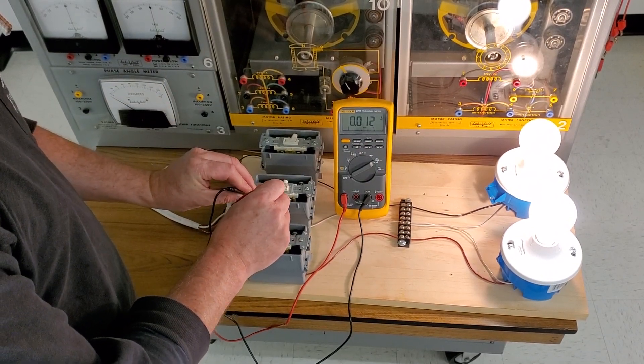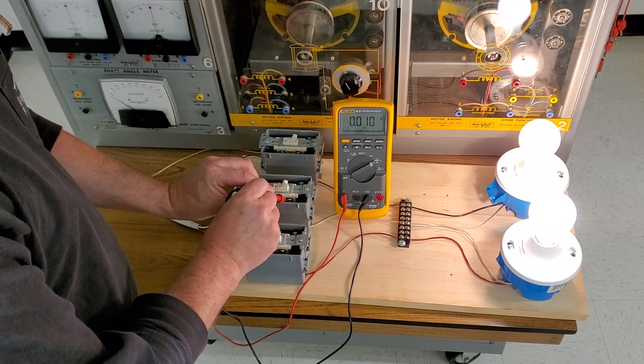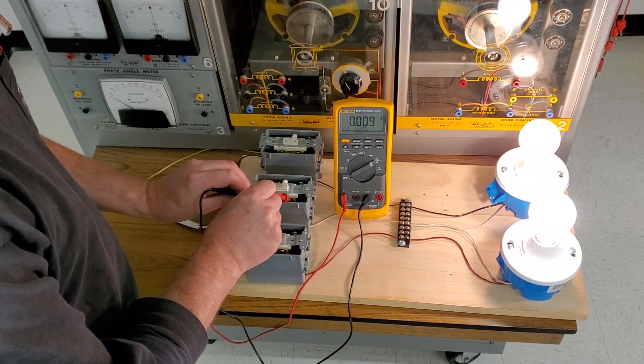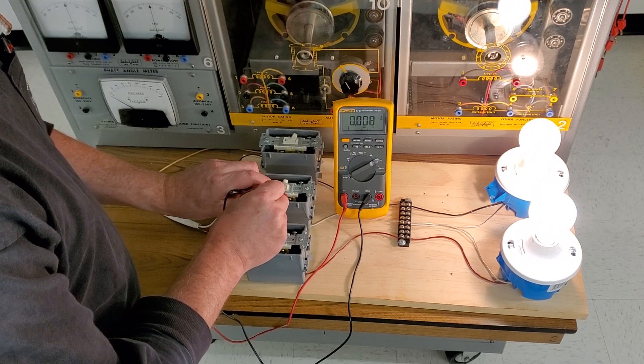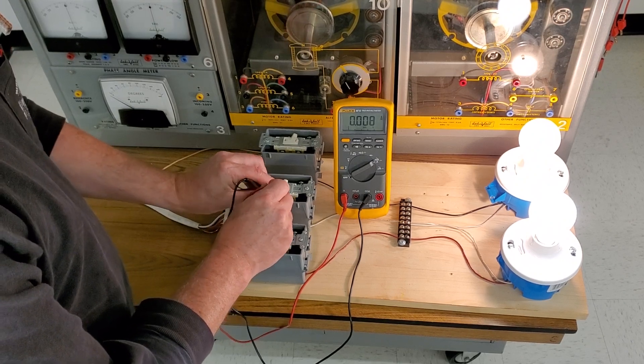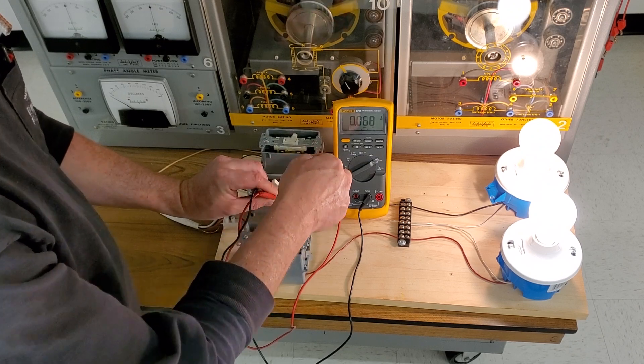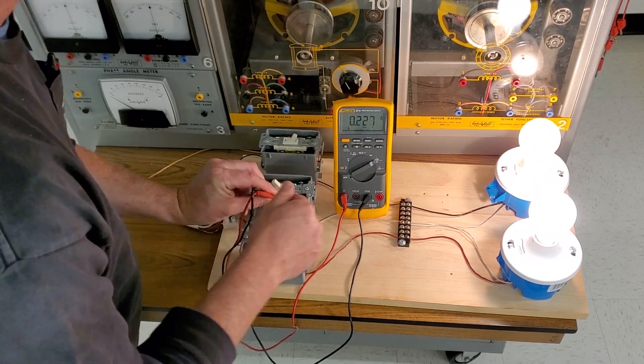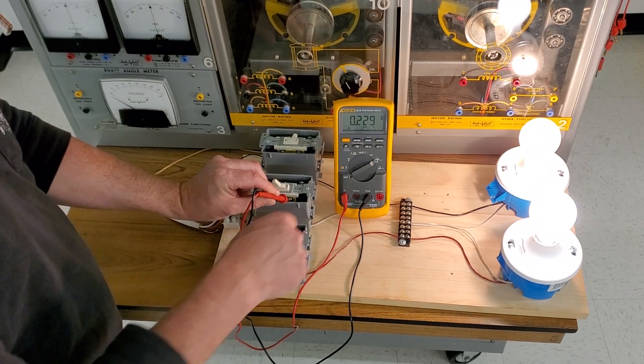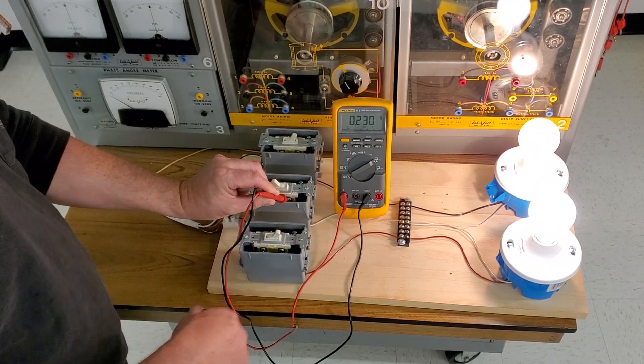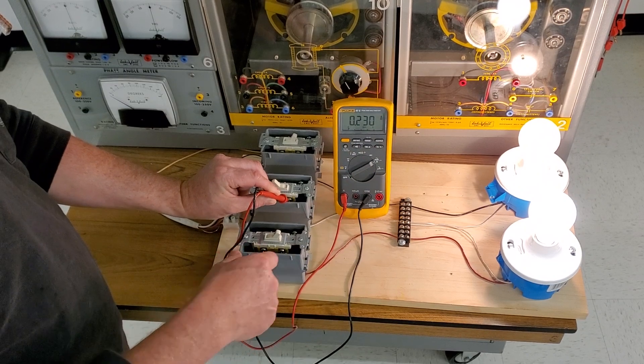But because this is a three-phase system and we're only using two out of the three phases, we're actually reading the sum of the total current here, which is 0.229 or about 0.24. This guy and this guy aren't canceling each other out on the neutral.